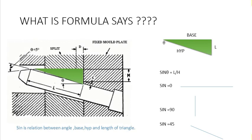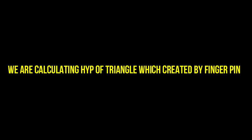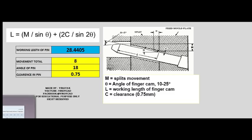What does this formula say? We are calculating the hypotenuse of the triangle created by the finger pin. This is the relation between theta — meaning the angle — and the base. We know the movement but not the base, so we find the hypotenuse using theta and the movement length. When theta is 0 we get a horizontal length, and when sine theta is 90 we get a vertical length.